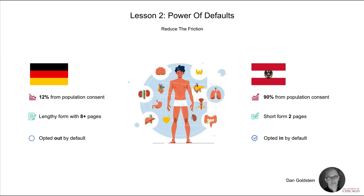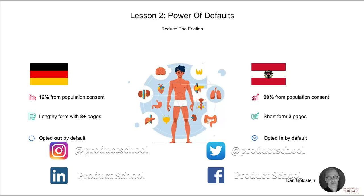The second lesson is about the power of defaults. Dan Goldstein from the University of Chicago noticed something curious. Organ donation rates vary drastically between Germany and Austria, with a low of 12% in Germany and a high of 90% in Austria. He found that the difference could be explained by the actual process of registering to become an organ donor. In both countries, you are asked about organ donorship when filling out paperwork to apply for your driving license. In Germany, the form has you opted out and requires you to fill out eight pages of paperwork to become one. However, in Austria, you are opted in by default and have to check a box to specifically say that you don't want to be a donor.